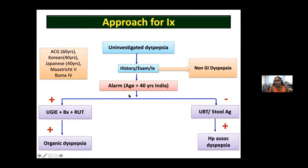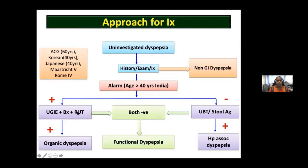If there are no alarm symptoms and the patient is under 40 years, do a urea breath test or stool antigen test — stool antigen is a good option during COVID as it avoids breath testing. If positive, consider it H. pylori-associated dyspepsia and treat. If both endoscopy and stool antigen are negative, the diagnosis is functional dyspepsia.